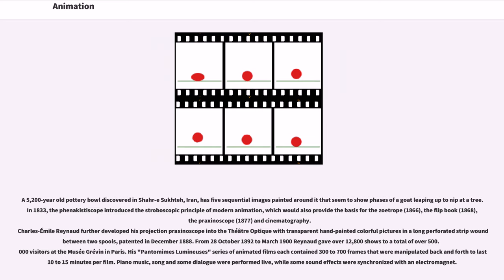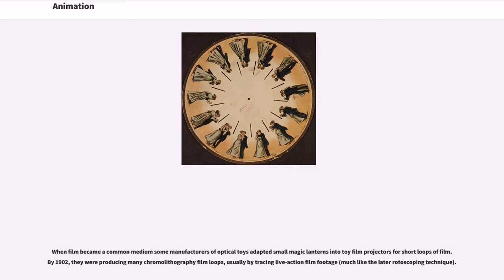From October 28, 1892 to March 1900, Raynaud gave over 12,800 shows to a total of over 500,000 visitors at the Musée Grévin in Paris. His Pantomimes Lumineuses series of animated films each contained 300–700 frames that were manipulated back and forth to last 10–15 minutes per film. Piano music, song, and some dialogue were performed live, while some sound effects were synchronized with an electromagnet.